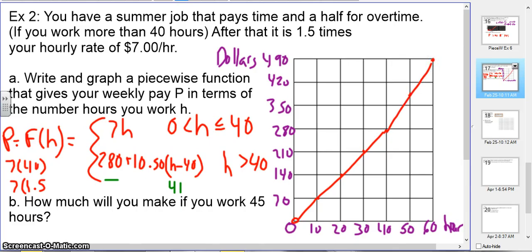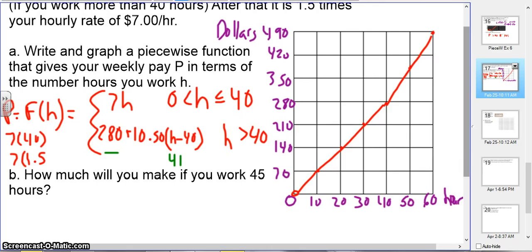How much will I make if I work 45 hours? I'm going to use my second equation. So it will be $280 plus $10.50, and then that would be an extra 5 hours past 40. So that's $332.50.